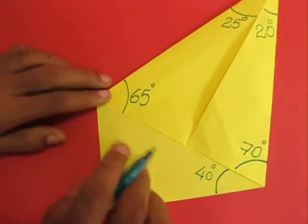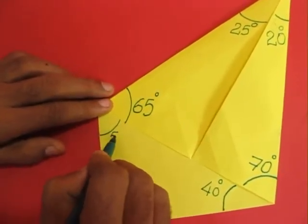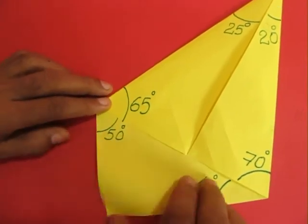Similarly on the left side 65 plus 65 would be 130. 180 minus 130 and this angle would be 50 degrees and the bottom angle is a right angle.